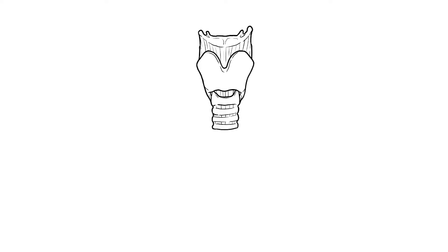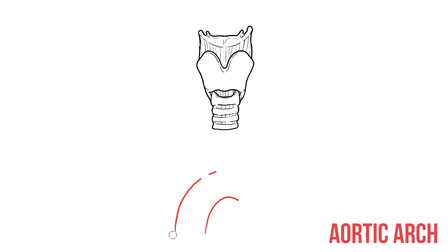We also need to add some major arteries that are found in this region. First we have the aorta heading up from the heart and looping over to the left to form the aortic arch, and as you draw this make sure to leave some spaces along the top for the next stage of the drawing.